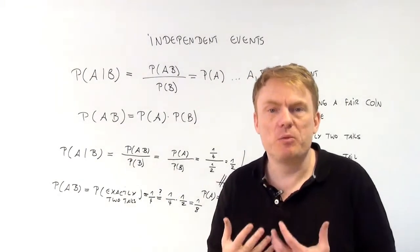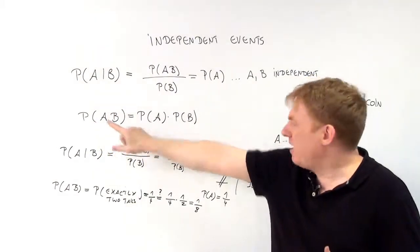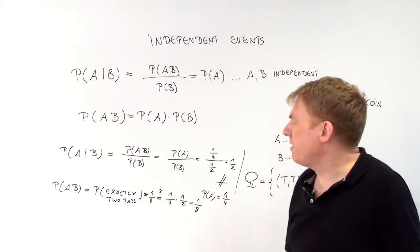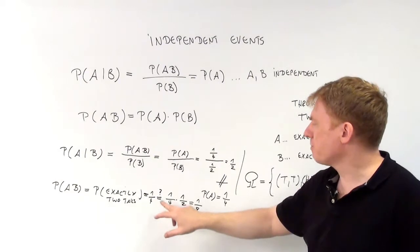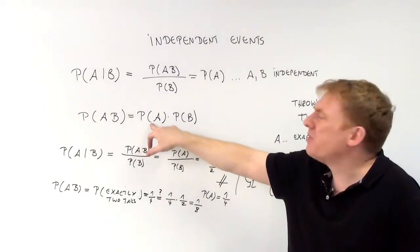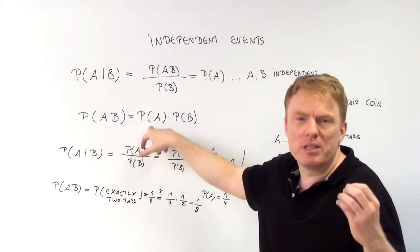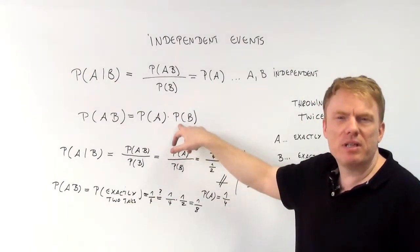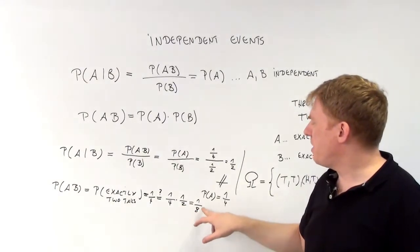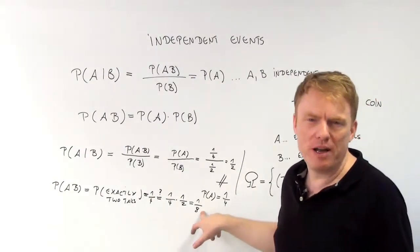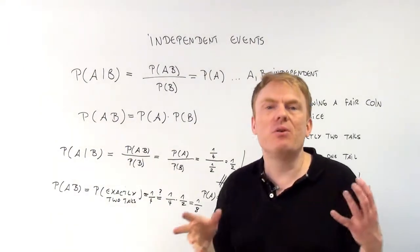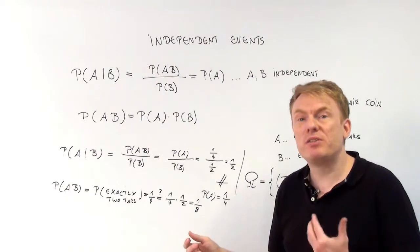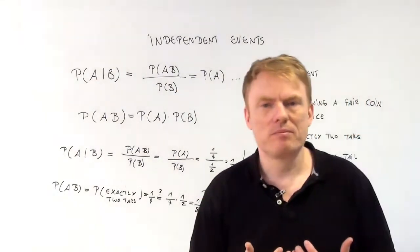The second formula should give us the same result — and it will. The probability of A and B at the same time — having two tails and having one tail — is 0.25, or 1 out of 4. Now we check: is this the same as P(A) times P(B)? P(A) is 1/4 and P(B) is 1/2, which gives us 1/8 = 0.125. Since 0.25 is not equal to 0.125, the second formula also confirms that A and B are not independent — they are dependent. Both formulas tell us the same result.